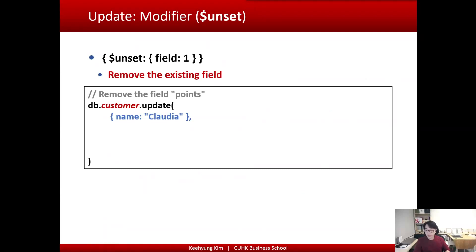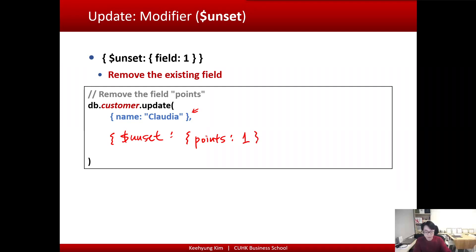To remove a field from a document, use the $unset operator. In the update function, specify the query and use $unset with the field name — for example, points — and a value of 1. This will remove the points field from the matched document.